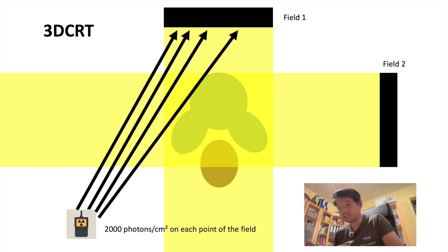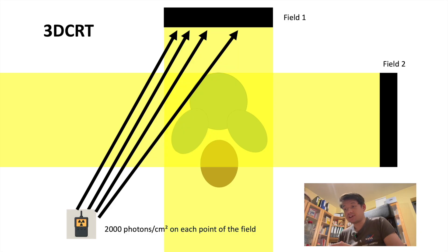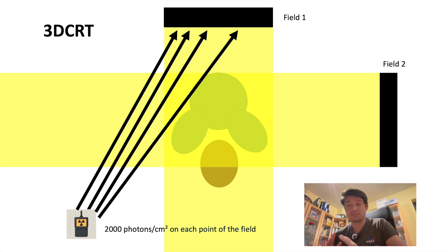So in 3D CRT, if I place a detector anywhere in front of the field, it will measure the same value, for example, 2000 photons per cm² at every point. This illustrates that in 3D CRT, the beam delivers a uniform fluence across the entire field.